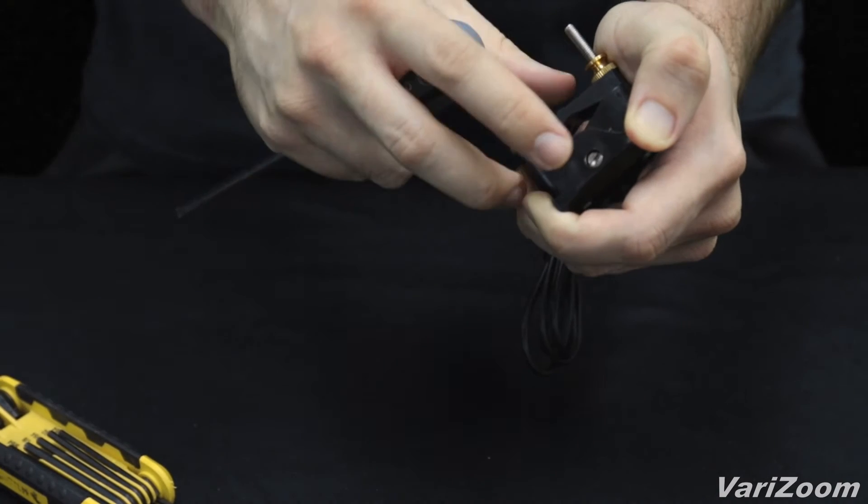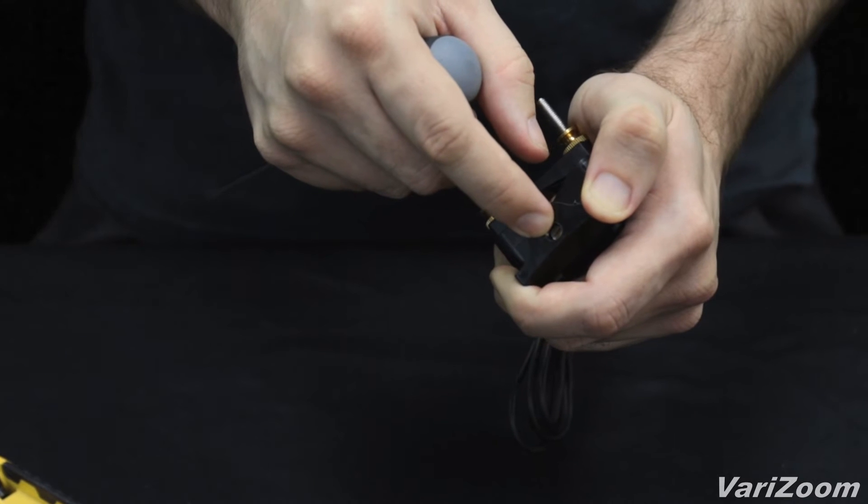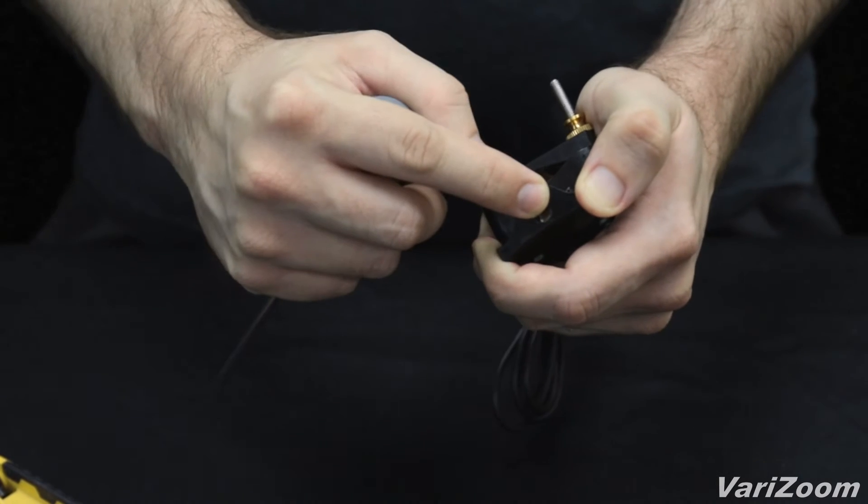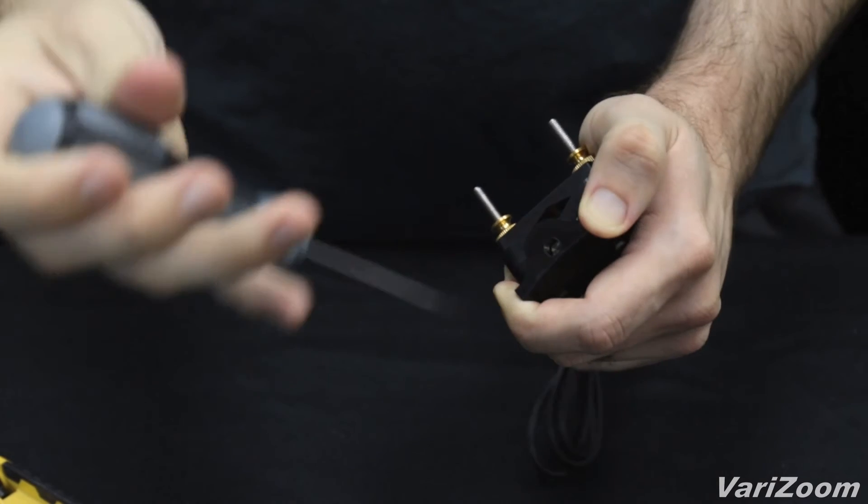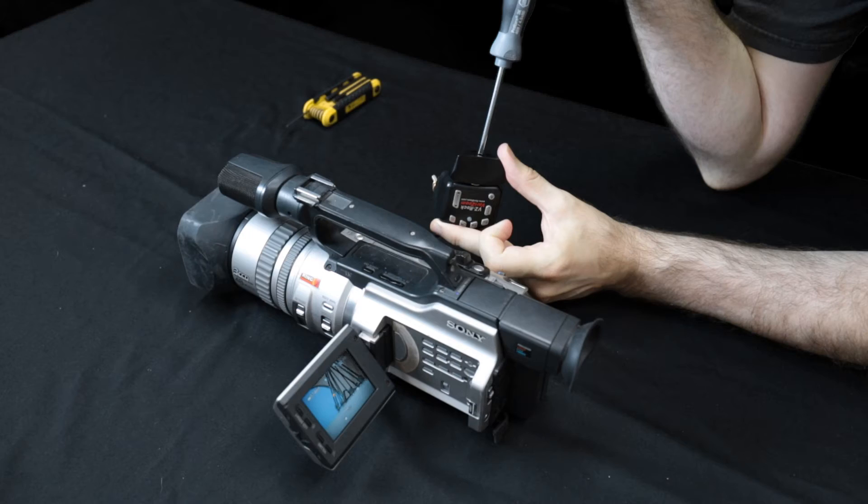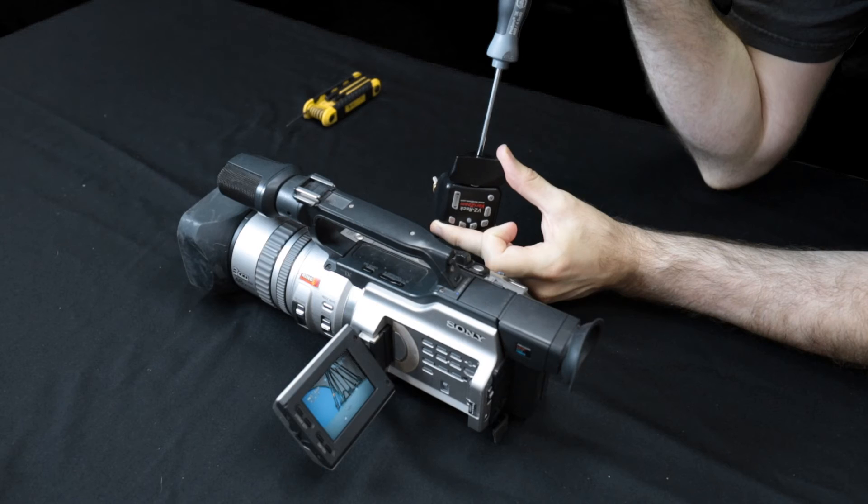What you want to do is preferably have this plugged into a camera. You're going to want to turn it clockwise until the zoom in state occurs, and then counterclockwise until the zoom out state occurs, and then turn halfway back. So, if I had this plugged in right now, I'd turn, see the zoom in occur, turn, see the zoom out occur, and then halfway back.